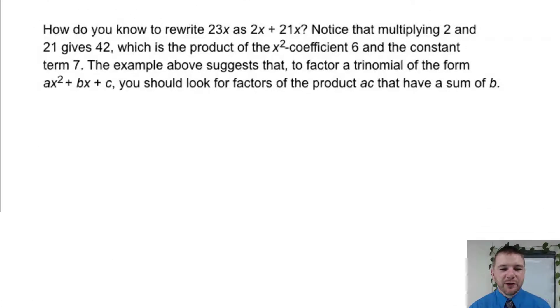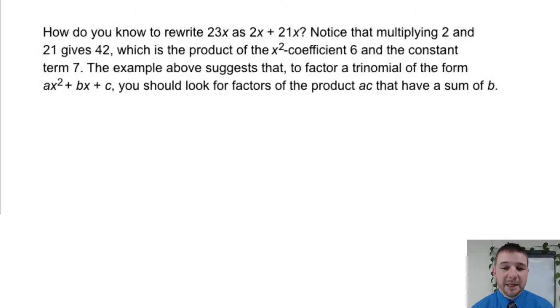How do you know to rewrite 23x as 2x + 21x? Well notice that multiplying 2 and 21 gives 42, which is the product of the x² coefficient 6 and the constant term 7. The example above suggests that, to factor a trinomial of the form ax² + bx + c, you should look for factors of the product ac that have the sum of b.